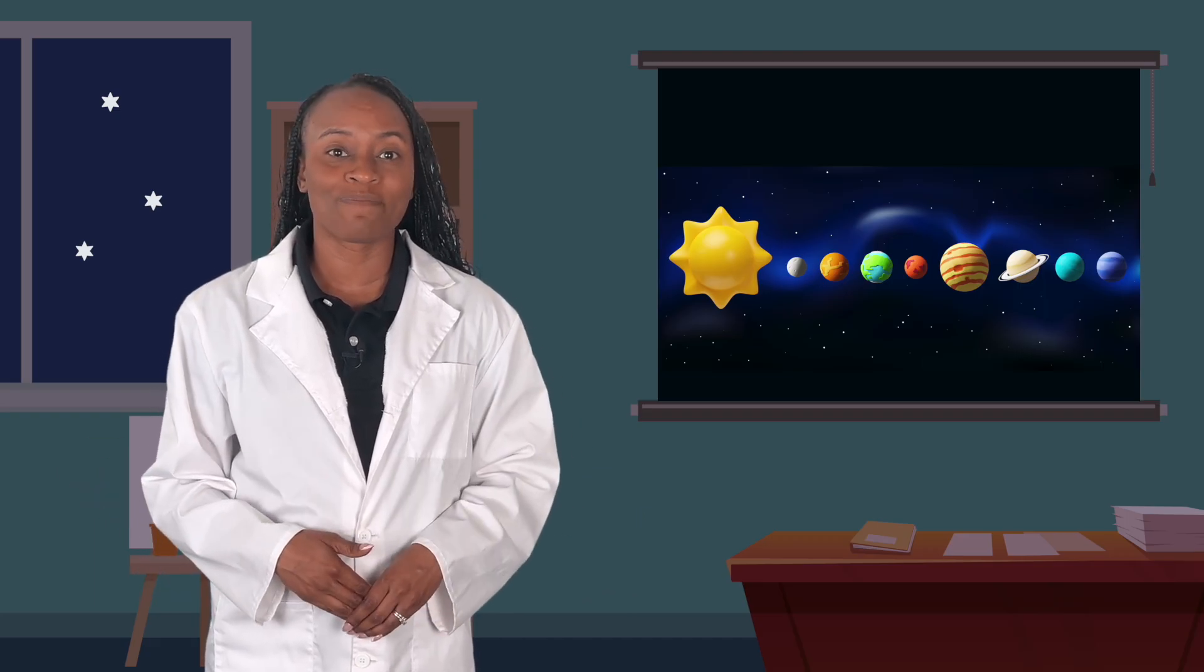And that's our solar system. One star at the center, eight planets, and lots of moons. The Sun is the only star around here. The rest are far, far away. Thanks for helping me discover everything up in the sky, scientists.